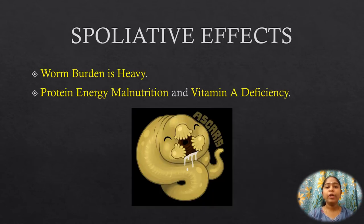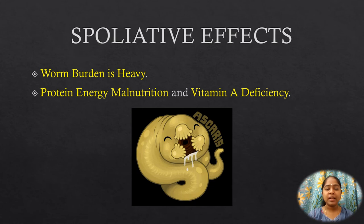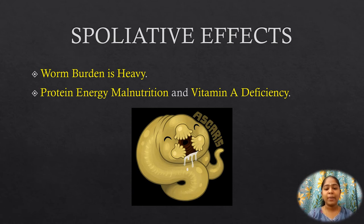The spoliative or nutritional effects are usually seen when the worm burden is heavy. The worms may be present in enormous numbers in small children, occupying a large part of the intestinal tract. This interferes with proper digestion and absorption of food, contributing to protein energy malnutrition (PEM) and vitamin A deficiency. Patients have loss of appetite. Abnormalities of the intestinal mucosa are often present, including broadening and shortening of the villi, elongation of crypts, and round cell infiltration of the lamina propria. These changes are reversed when the worms are eliminated.